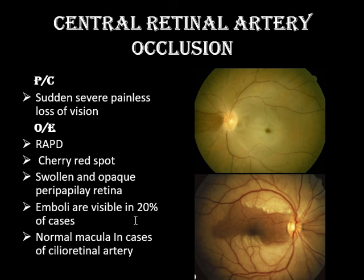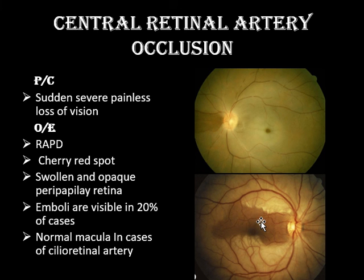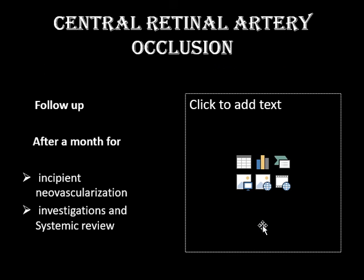The macula appears pink because intact choroidal vessels are visible through the thin fovea. In 20% of the normal population, macular blood supply is from the ciliary circulation through the cilioretinal artery; if the fovea is supplied by this artery, the patient may have normal central vision even in central retinal artery occlusion. We need to follow these patients after one month to look for incipient neovascularization, which can lead to neovascular glaucoma, and to review systemic investigations.